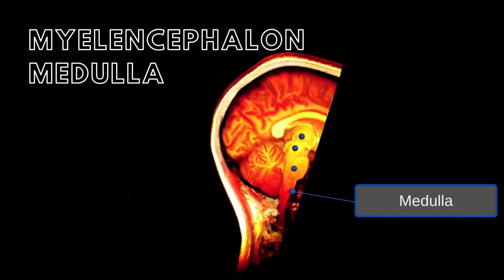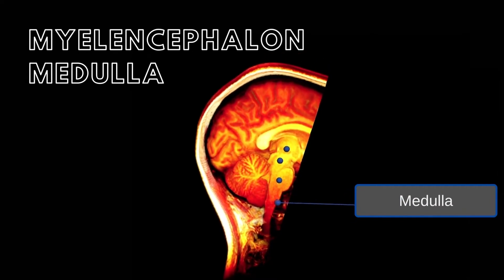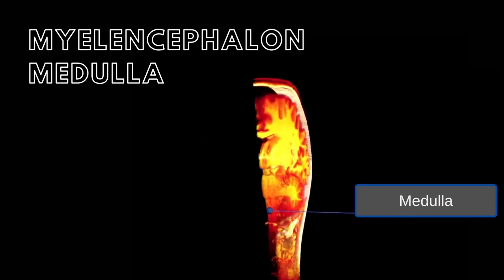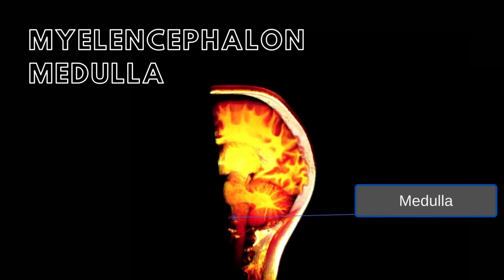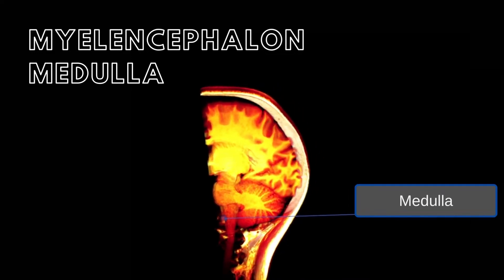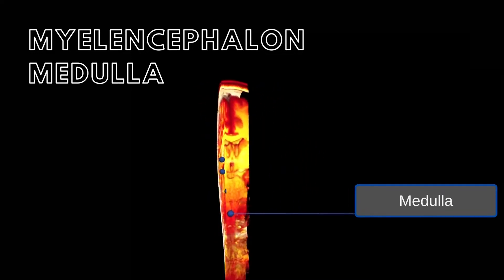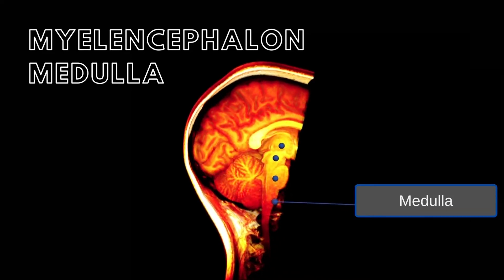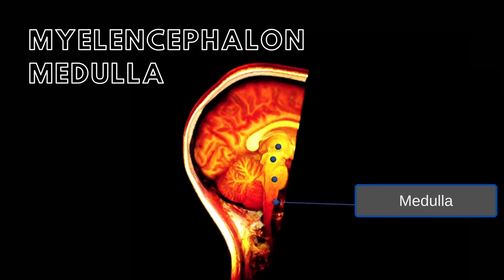Let's begin with the myelencephalon, or the medulla, which is the most caudal portion of the brainstem and extends from the foramen magnum of the skull to the caudal portion of the pons. The medulla is the location of several important physiological centers that serve to regulate the cardiovascular and respiratory systems.